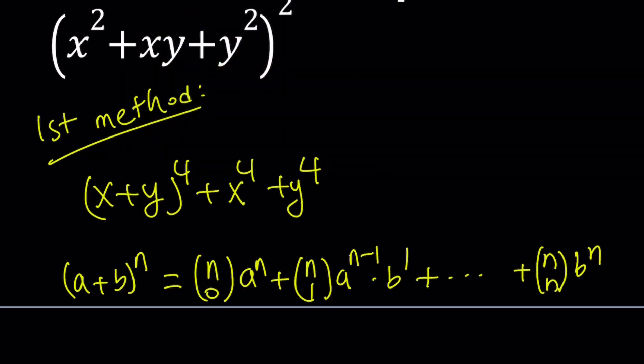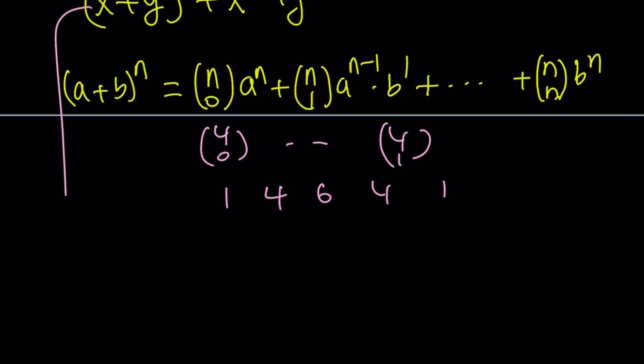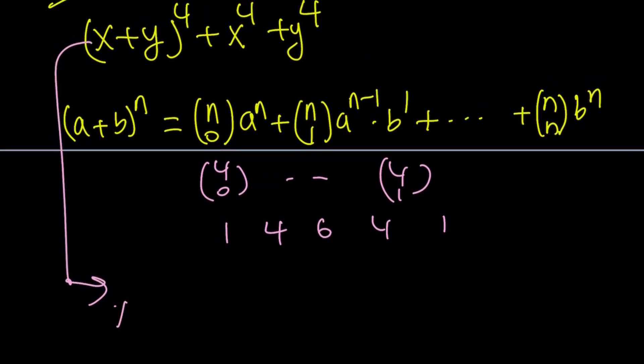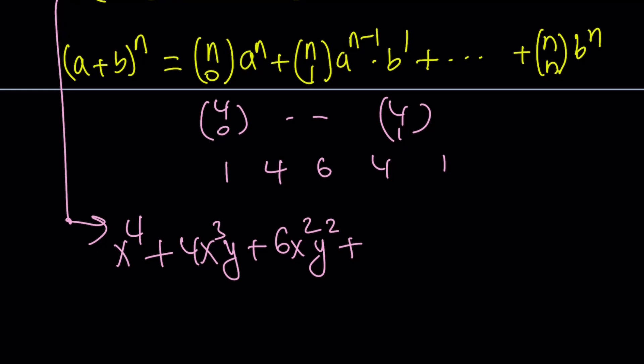Now we're going to use that for x plus y to the 4th power. If you expand 4 choose 0 to 4 choose 1, you're going to get the following coefficients: 1, 4, 6, 4, and 1. There's always a symmetry. So let's go ahead and expand this x plus y to the 4th. It's going to be x to the 4th plus 4x cubed y plus 6x squared y squared. Notice the symmetry. In the video we did one hour ago, we talked about something similar without the binomial coefficients. But that's another story. And then plus y to the 4th power.